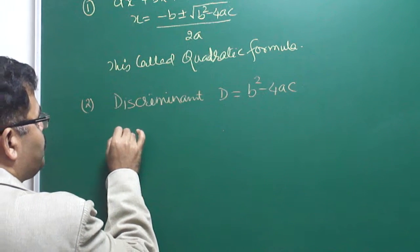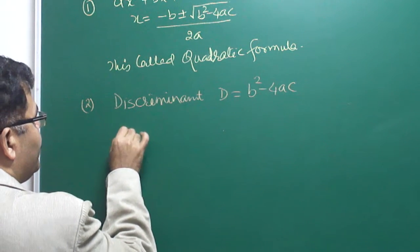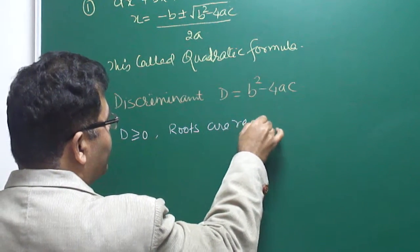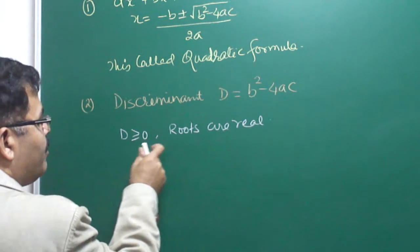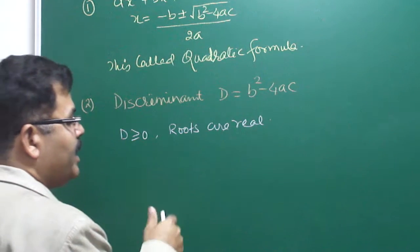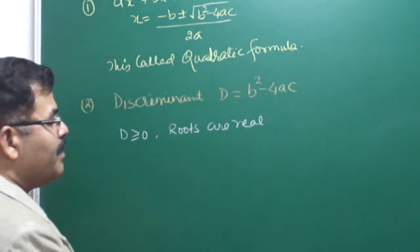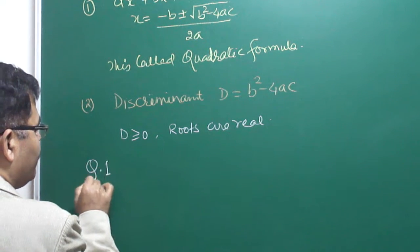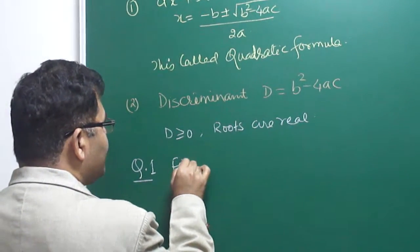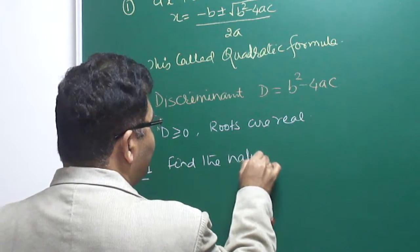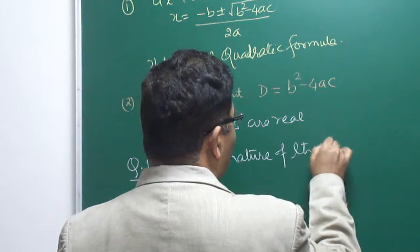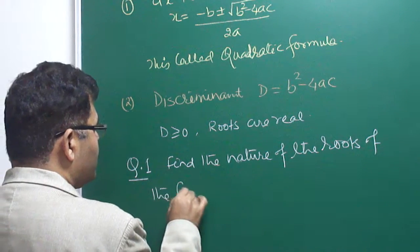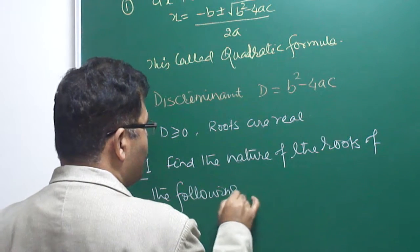The knowledge gathered in the previous lecture is: if D is greater than zero, then roots are real. Wherever we have to describe that roots are real or imaginary, for real roots we always write D must be greater than or equal to zero. The first type of question I am considering is: find the nature of the roots of the following equations.